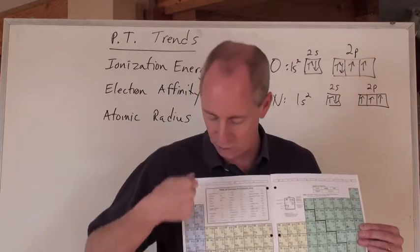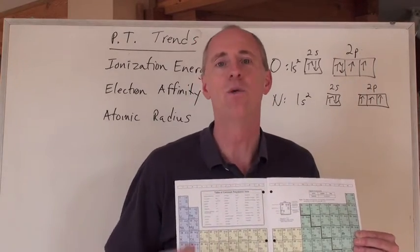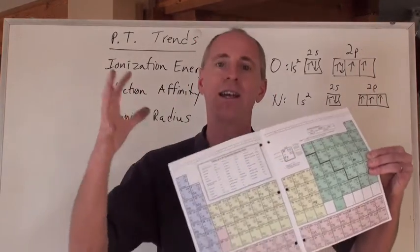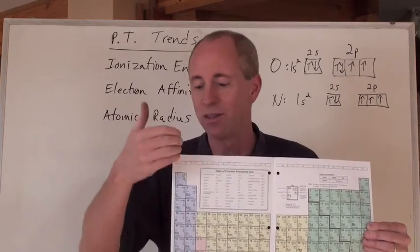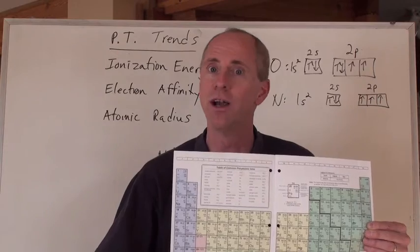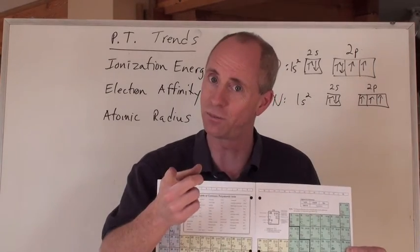Okay, and what's the trend of going down though? Hey, you can't help it. When you go down, you're increasing energy levels, and therefore the atom just gets bigger. So when you go down, it makes sense. The atom gets, the radius gets larger. But when you go across, it gets smaller. Thank you.